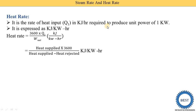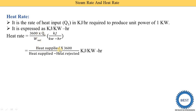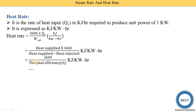Efficiency is equal to net work done divided by heat supply. So heat rate equals 1 upon efficiency. If we supply q1 to the denominator, it becomes W_net upon q1, which is the efficiency. Therefore, heat rate equals 1 upon efficiency. Further simplifying: q1 is the heat supply, and W_net equals heat supply minus heat rejected. So heat rate equals 3600 divided by thermal efficiency. This is the second equation of heat rate.